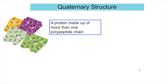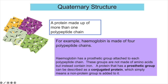The quaternary structure occurs when a protein is made up of more than one polypeptide chain. A key example is haemoglobin, made up of four polypeptide chains. Haemoglobin also has a prosthetic group — the haem group — attached to each polypeptide chain. A prosthetic group is not made up of amino acids; in haemoglobin it contains an iron ion. A protein with a prosthetic group is called a conjugated protein, meaning a non-protein group has been added to it.